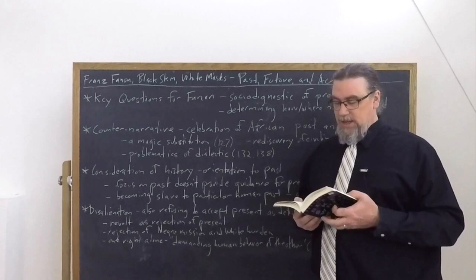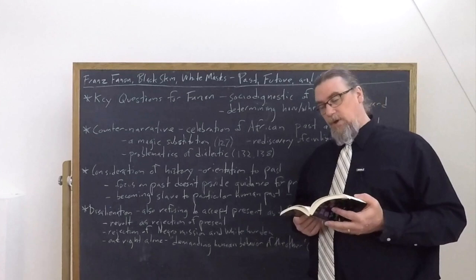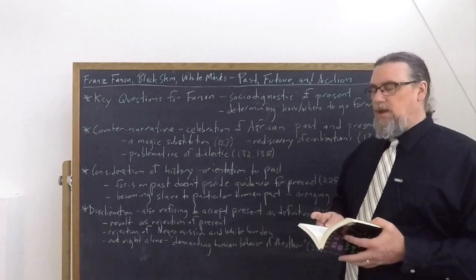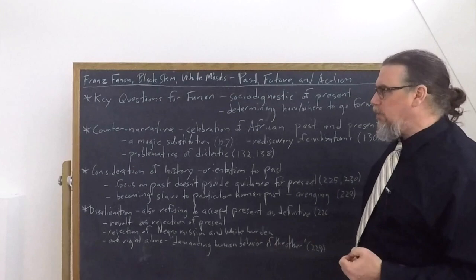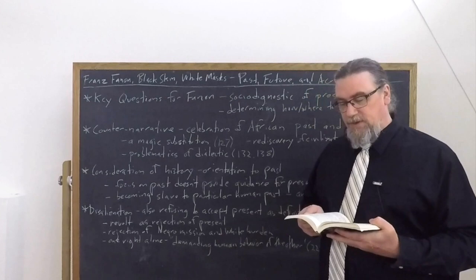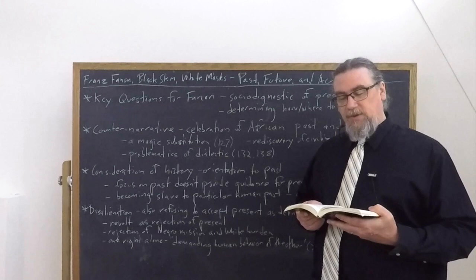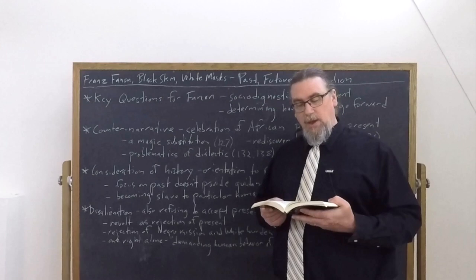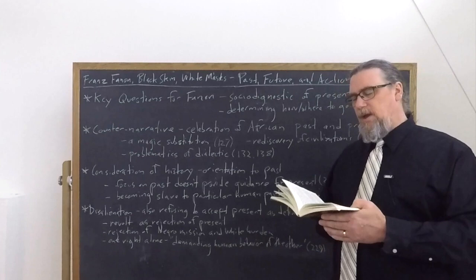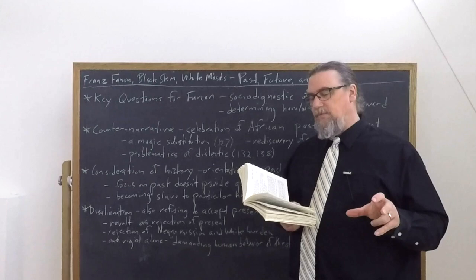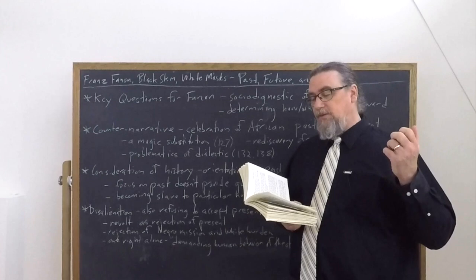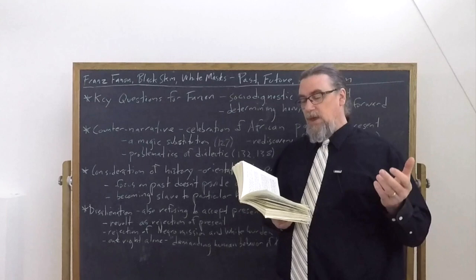And again, he brings up Jean-Paul Sartre, who's talking about Senghor, and existentialism in some respect is making him distrustful of these essentialist approaches. A little bit later on in that section, he says that without a Negro past, without a Negro future, it was impossible for me to live my Negro hood, not yet white, yet no longer holy black. I was damned. Between the white man and me, the connection was irrevocably one of transcendence. But the constancy of my love had been forgotten. I defined myself as an absolute intensity of beginning. So I took up my negritude and with tears in my eyes, I put its machinery together again. What had been broken to pieces was rebuilt, reconstructed by the intuitive lianas, the vines of my hands.